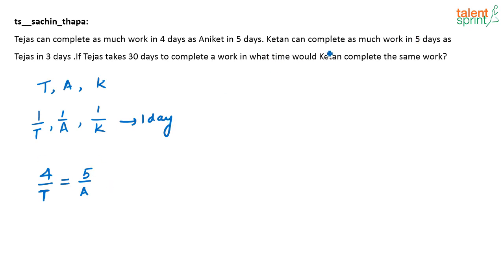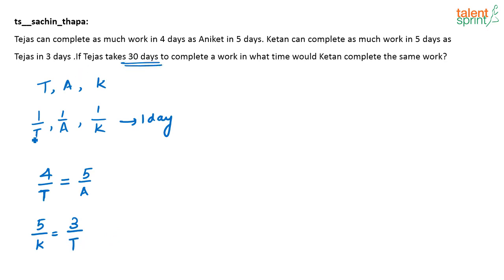Similarly, what does the second statement mean? Ketan can complete as much work in 5 days as Tejas in 3 days. So 5 days Ketan will do 5/K of the work, and 3 days Tejas will do 3/T of the work, and these are equal: 5/K = 3/T. It is also given that Tejas takes 30 days to complete the work, so T = 30.